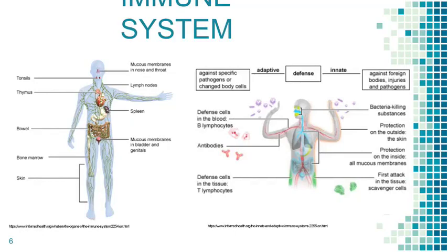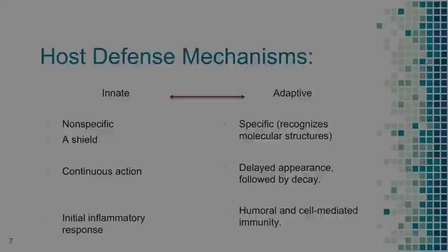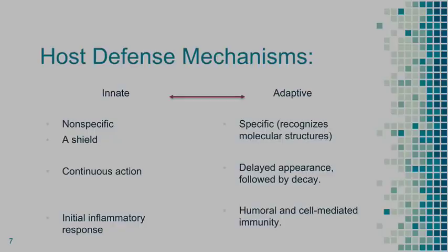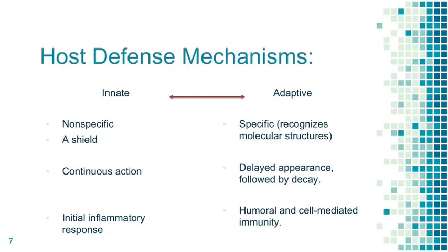Going through the immune system: to your left are the organs of the immune system. Host defense mechanisms are conventionally divided into innate and adaptive — they interact closely and it's a continuum of interaction with pathogens. The innate immune system is nonspecific and continuous. We think of it as a physical barrier, but it turns out it's way more than that. The initial inflammatory response is mediated by the innate immune system and links both immune systems.